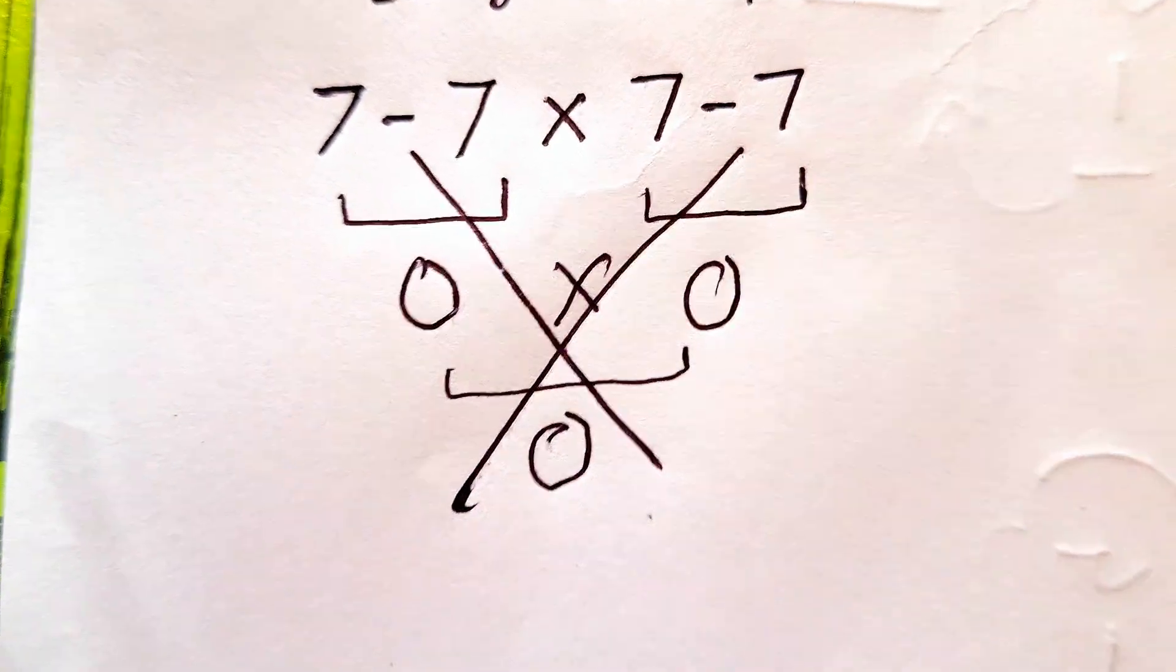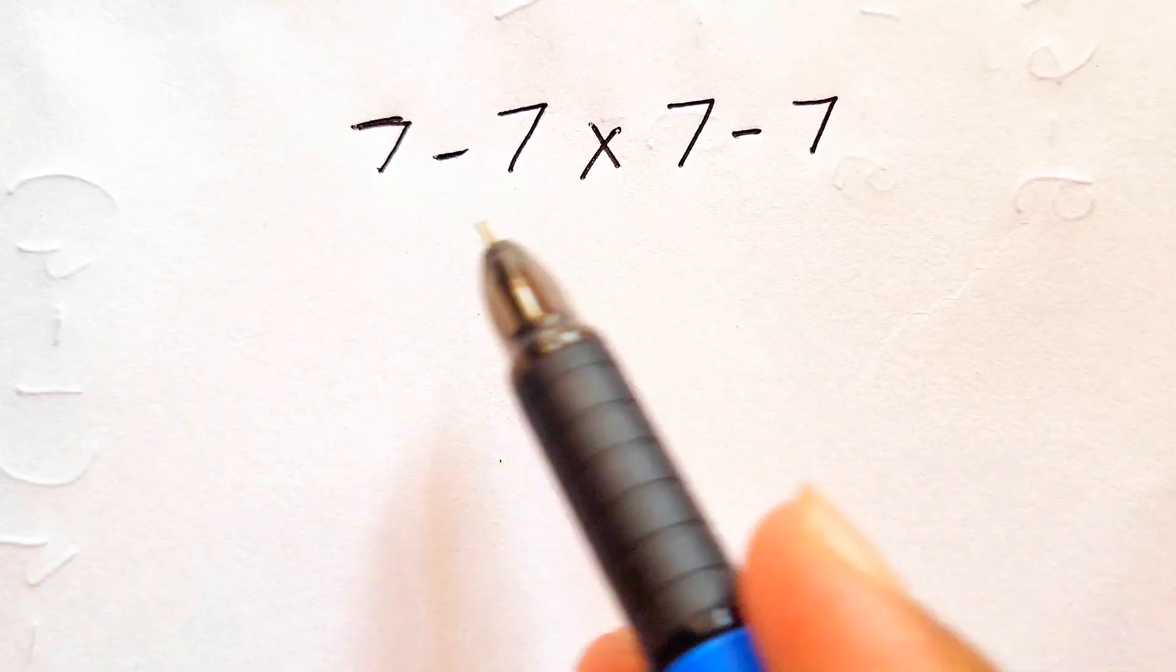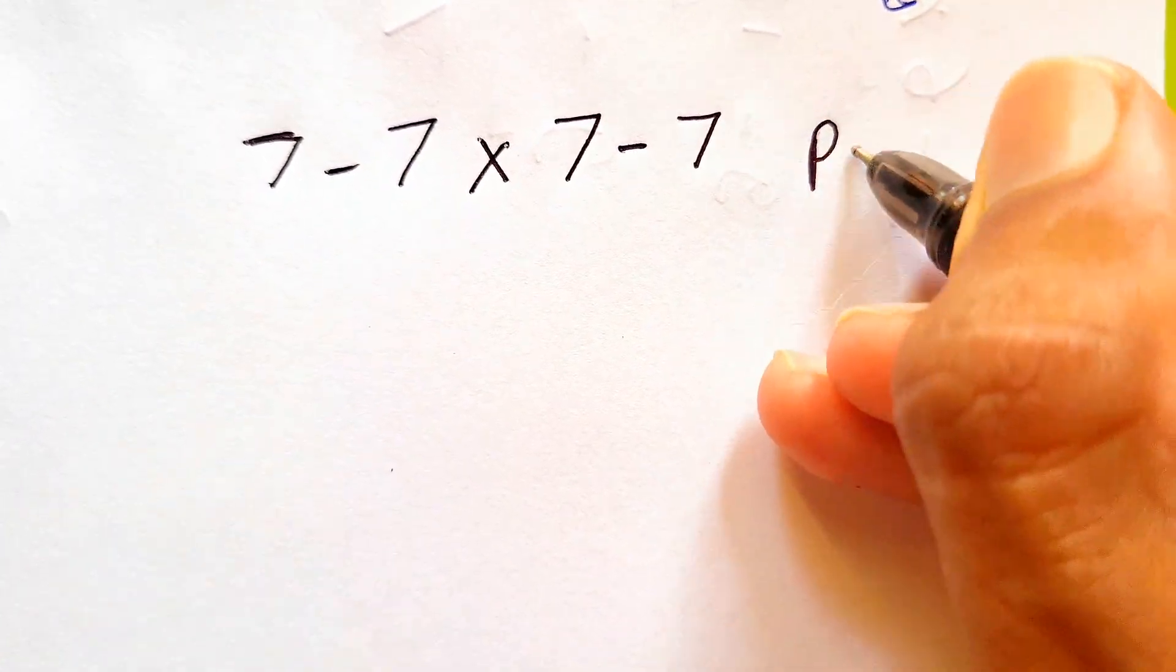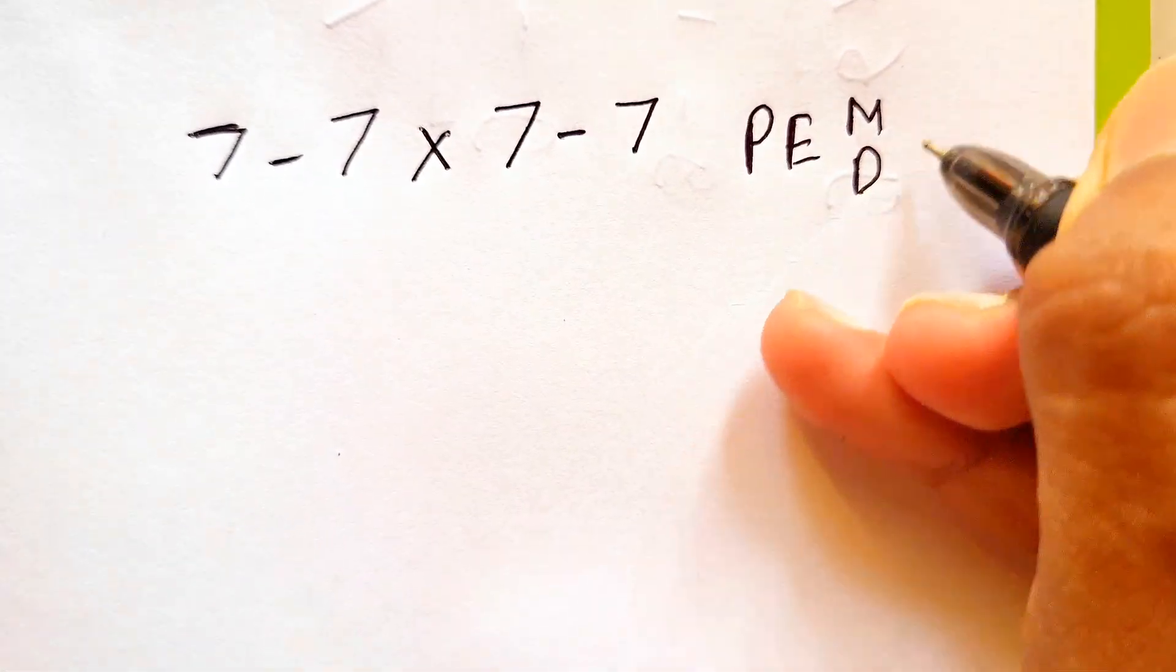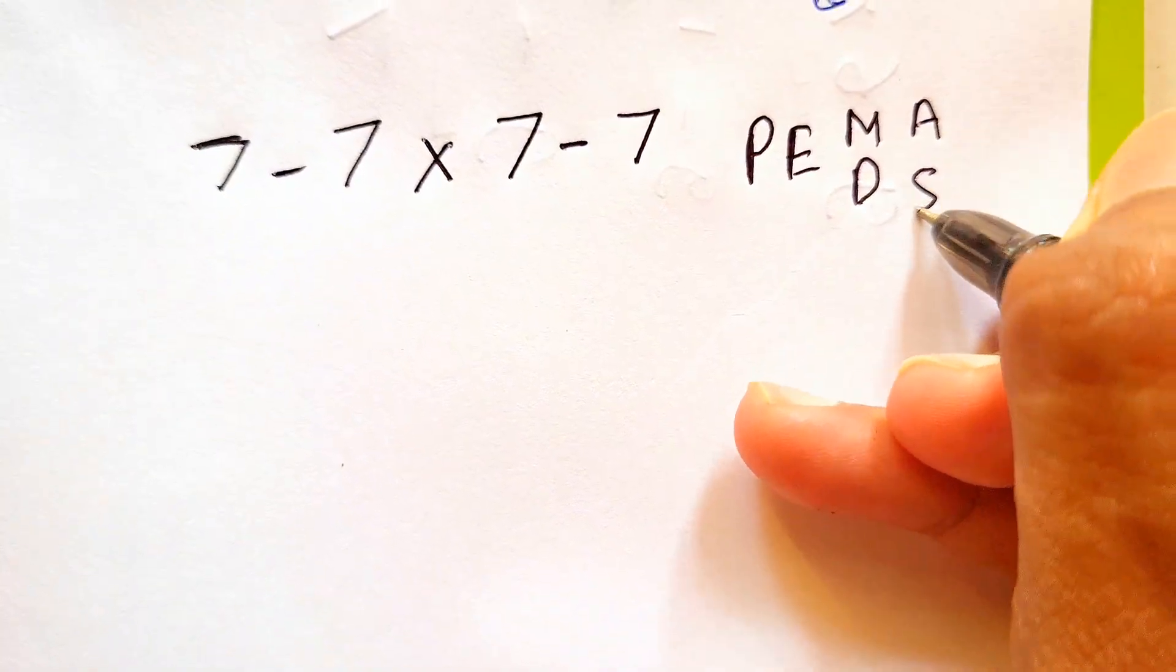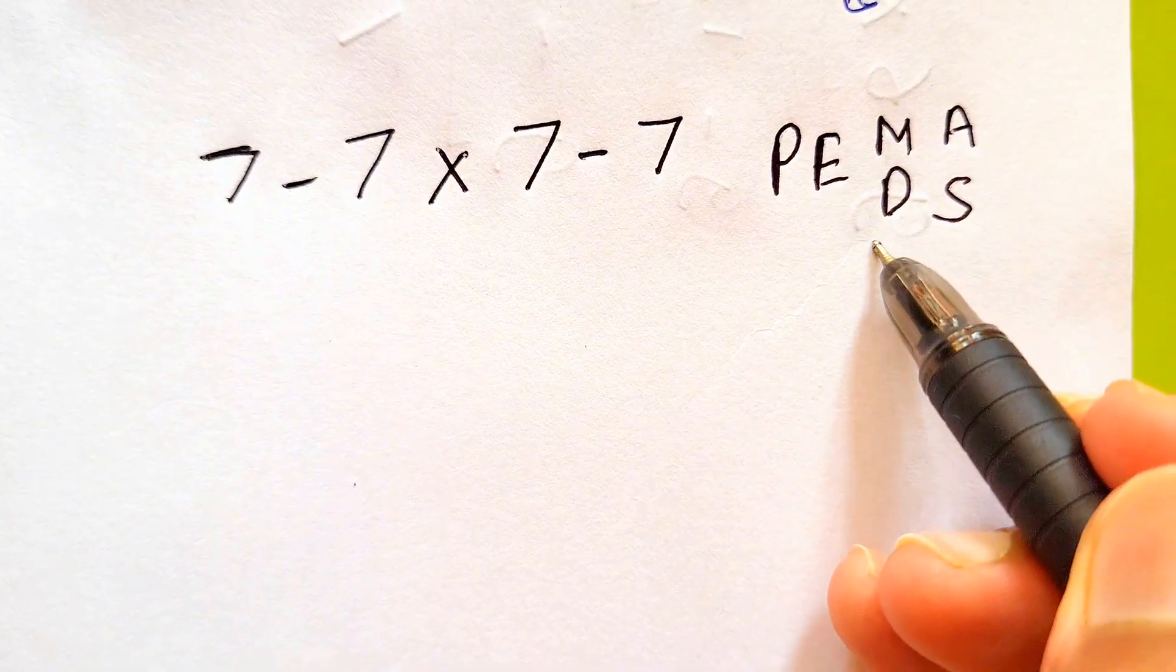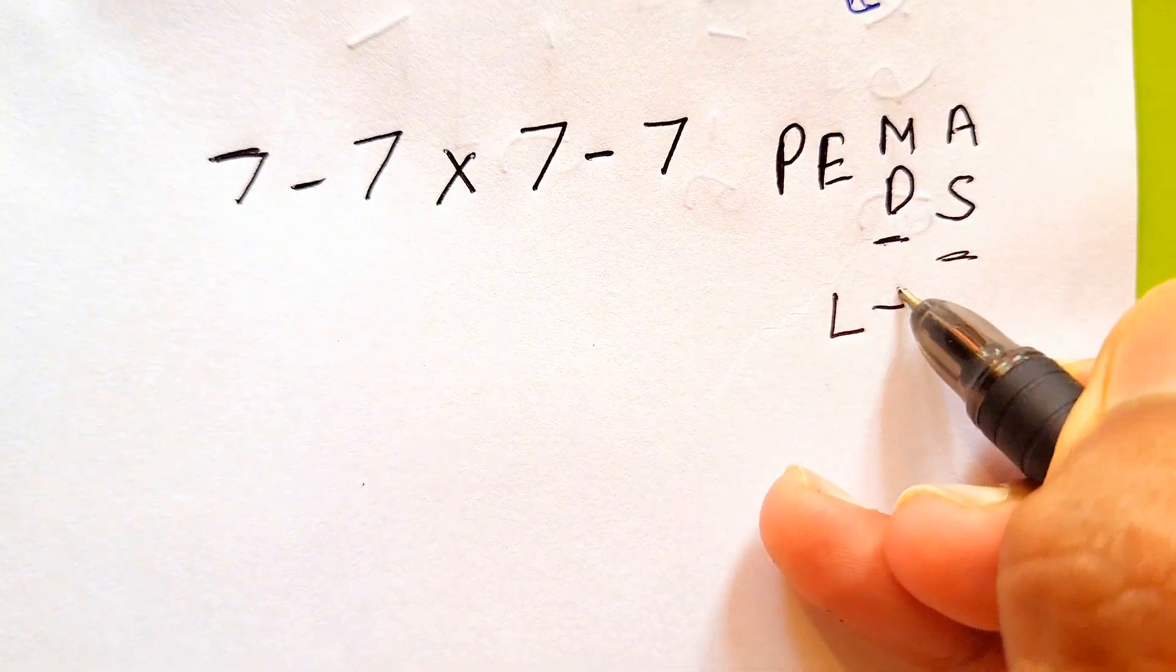Because the answer is incorrect, let's see how we can solve this. So for solving this expression, we need to follow the order of operations that is also called PEMDAS: P-E-M-D-A-S. It means parenthesis, exponents, multiplication, division, addition, and subtraction.